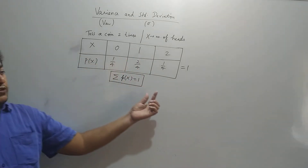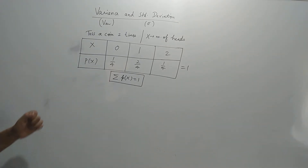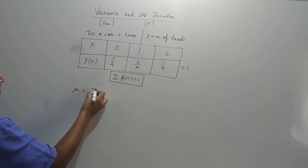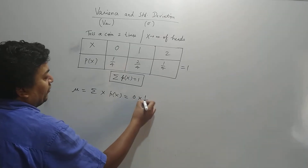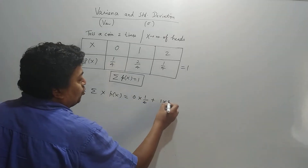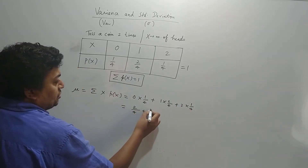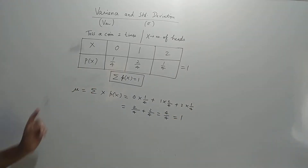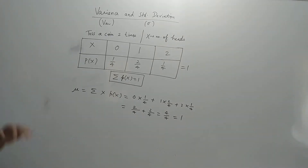We know that the summation of P(x) is always 1 in a probability distribution — that was covered in a previous video. Now let's calculate the mean. Mean is summation of x·P(x): 0 × 1/4 + 1 × 2/4 + 2 × 1/4 = 2/4 + 2/4 = 4/4 = 1. So the mean is 1, meaning on average you can expect 1 head.